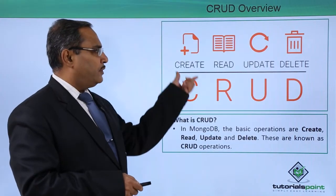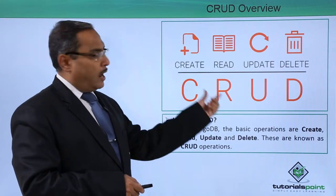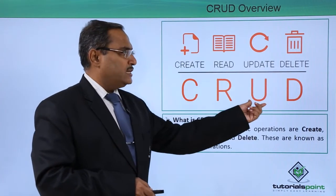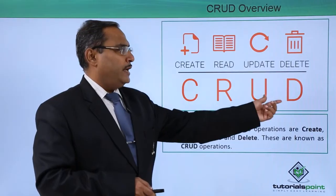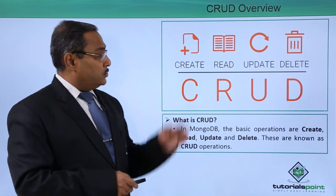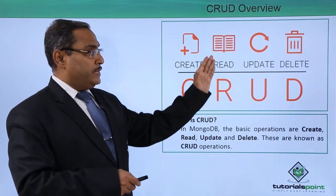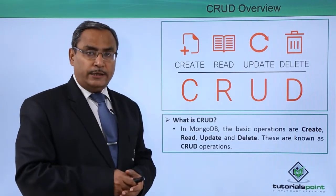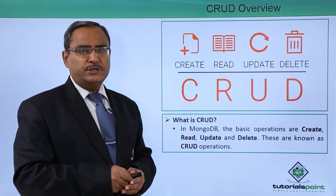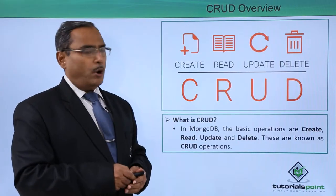C stands for create, R stands for read, U stands for update and D stands for delete. So create, read, update and delete are the very fundamental operations on MongoDB.